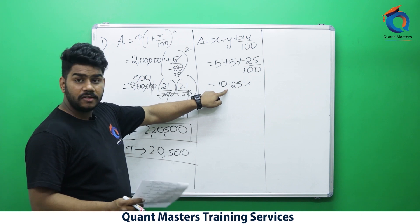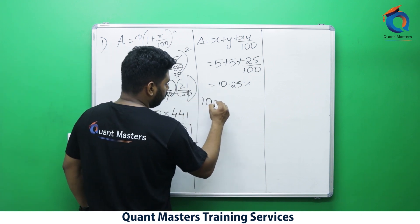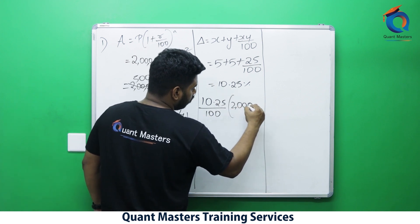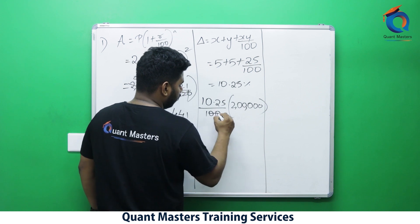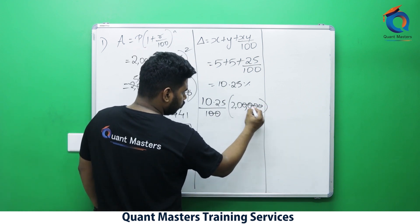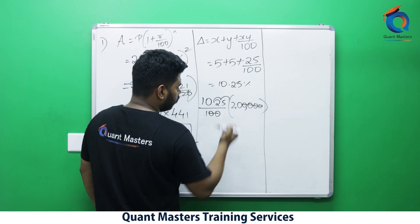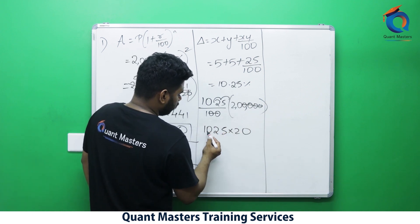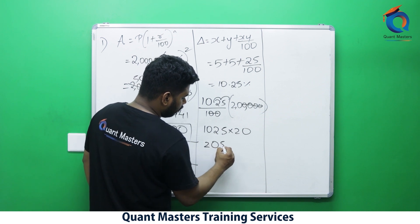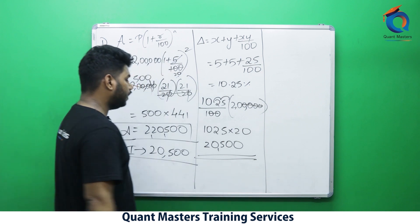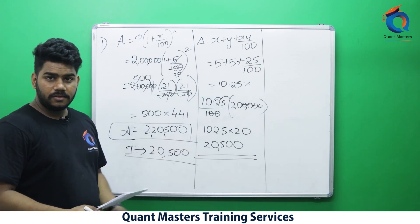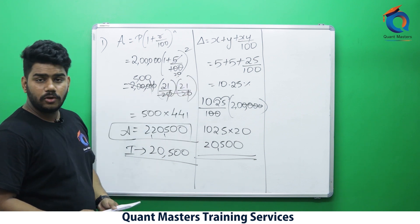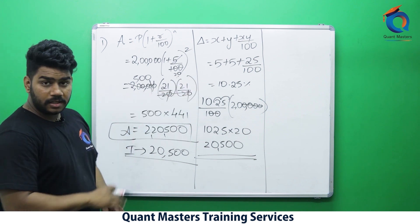So the compound interest is 10.25% of the principal of 2 lakhs. 10.25 × 20 = 20.50, giving 20,500 rupees — the same answer. About 25 to 27 percent of people apply this method. There is also a third method.